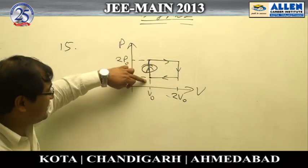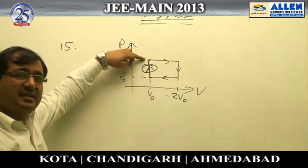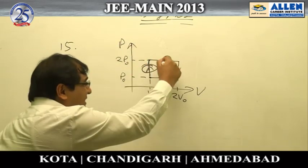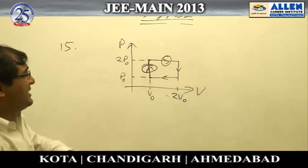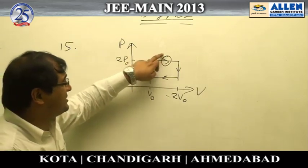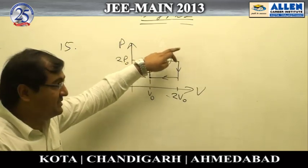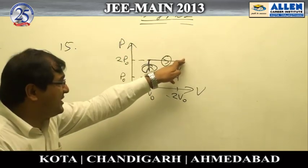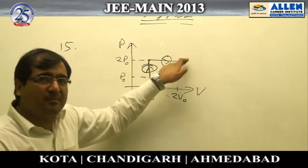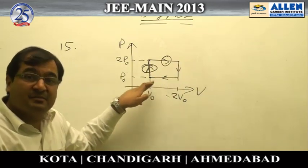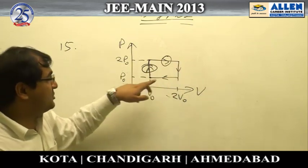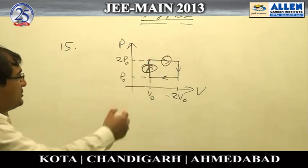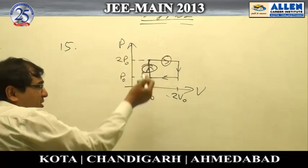Looking at the diagram, there are only two stages where heat is being supplied: one under isochoric conditions where pressure is increasing, meaning heat must be supplied, and another under isobaric conditions where volume is increasing. In the other two parts of the process, heat is not supplied but rejected.